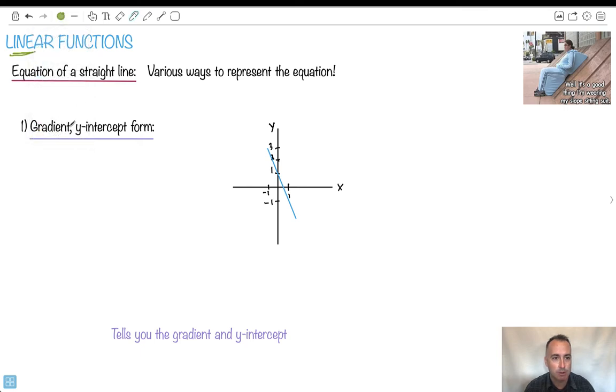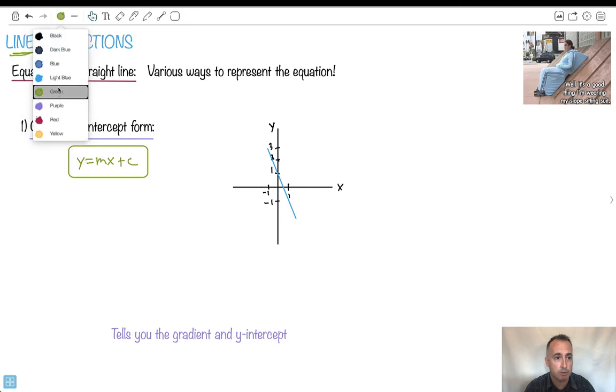There's three different forms I'm going to show you. One of them is called the gradient y-intercept form. It's probably the most common one. You've very likely already seen it, but if you haven't, well here it is. It goes y equals mx plus c. So let me label everything for you. We're going to define this letter called m, which is the gradient.